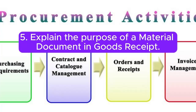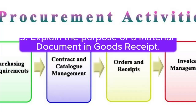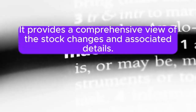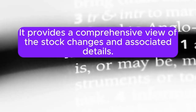Question 5: Explain the purpose of a material document in goods receipt. Answer: The material document is a record in SAP MM that documents all material movements, including goods receipt. It provides a comprehensive view of the stock changes and associated details.